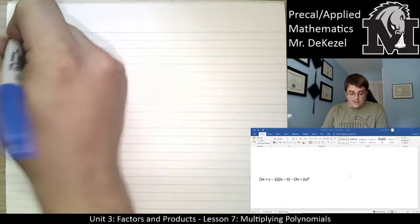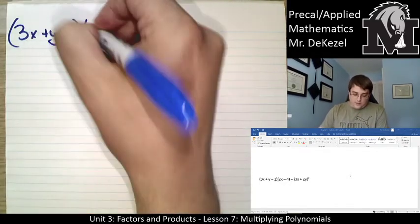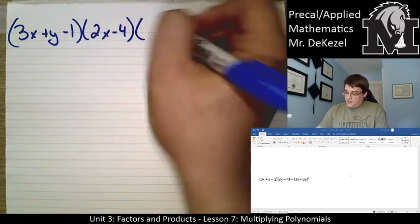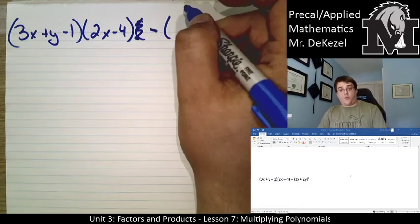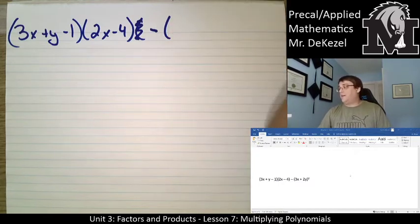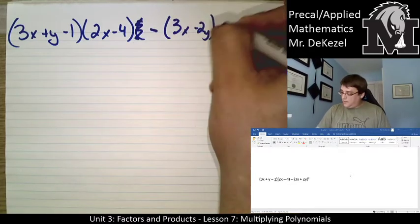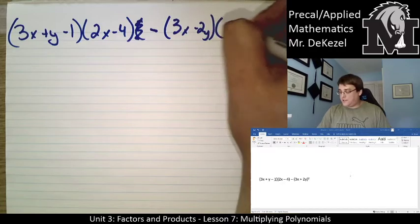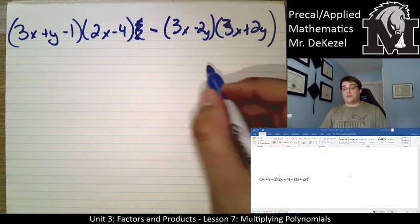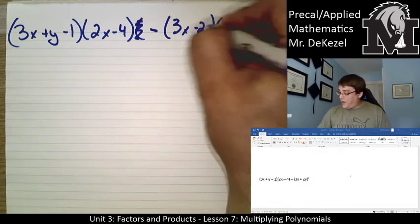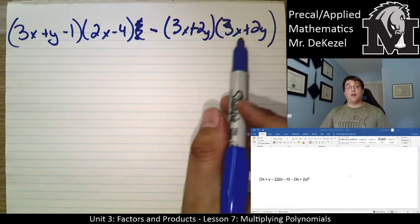So we've got 3x plus y minus 1, we've got 2x minus 4, and then I've got subtract. Now, since this whole thing is squared, the entire second part is squared, that's like saying 3x plus 2y multiplied by itself, 3x plus 2y. It's very common to just square both things in the brackets, but unfortunately that will not work for you. That will not give you the correct answer. You need to actually write it out and then foil it.